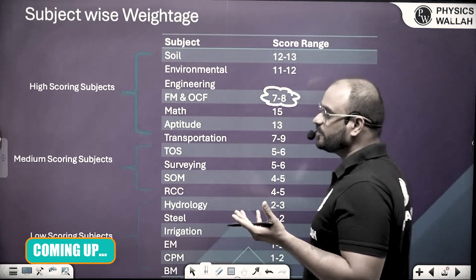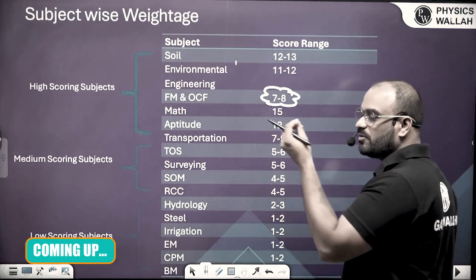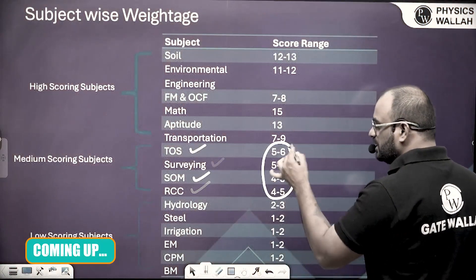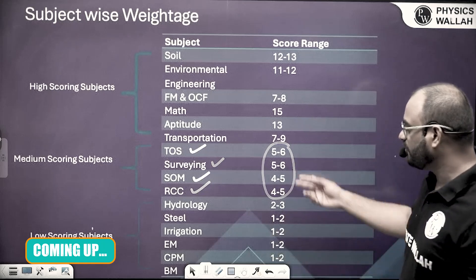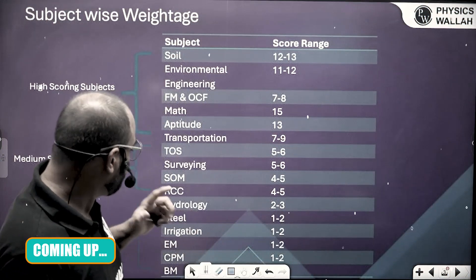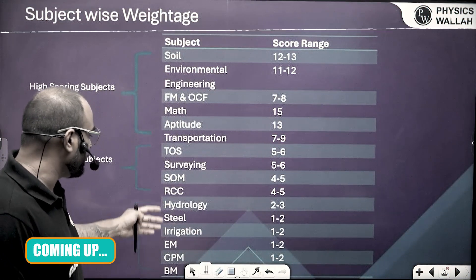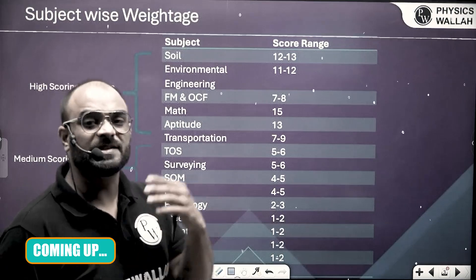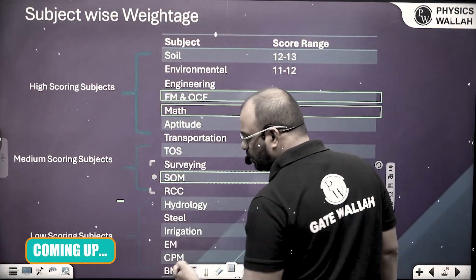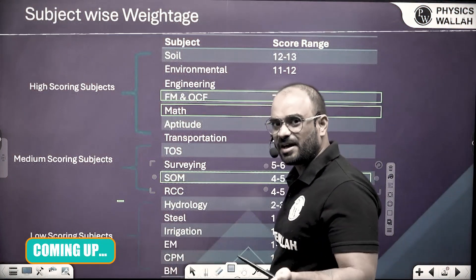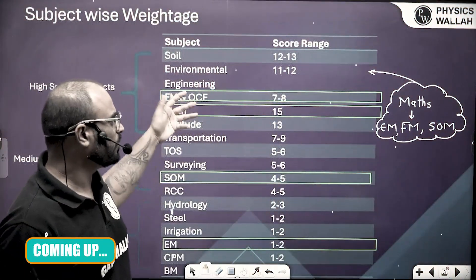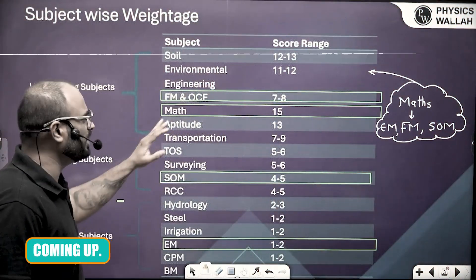Most importantly, we need to cover this type of subject first. If you see the weightage of each subject — like 5 to 6 marks — even if you are not able to do much practice on these subjects, you are still able to solve the questions in the GATE examination. And for subjects like engineering mechanics, there is no requirement of any other concept.